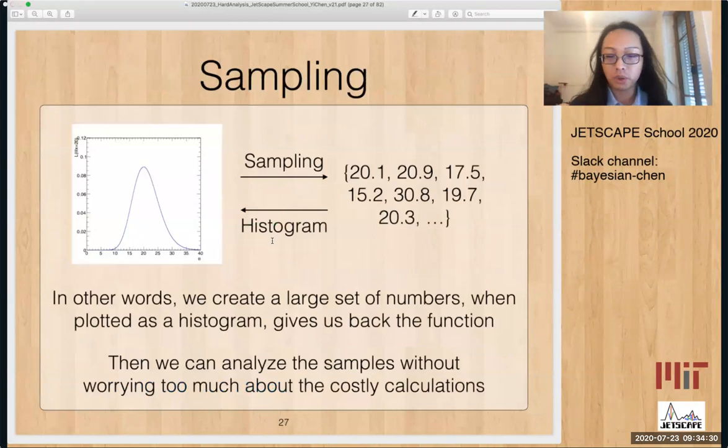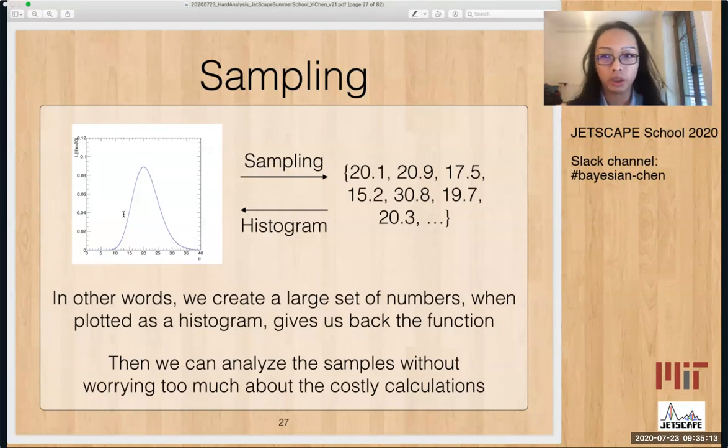So in other words, on the left-hand side here, we see that there's this function, the likelihood function. And what we do is that we create a large set of numbers. For example, the first few are here and so on and so forth, like a million numbers. And if we take these numbers and plot a histogram, it gives us back the function. So if we are able to do this, then we can just analyze the samples because this is just a collection of numbers. We can derive things very easily without having to worry about the complicated calculations on the left-hand side, where each point can take one second in the previous case or even longer in many other cases.